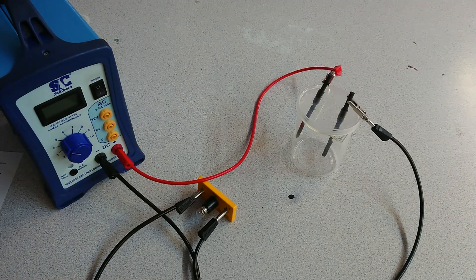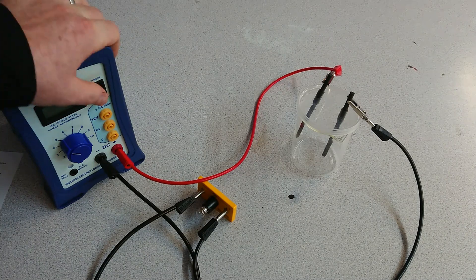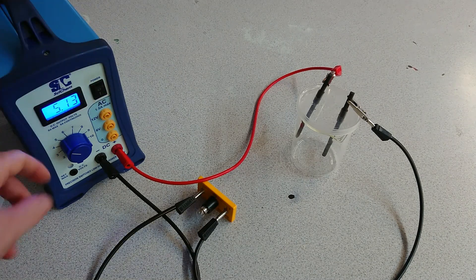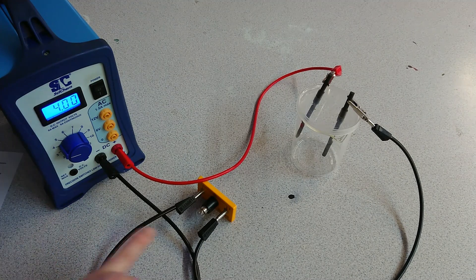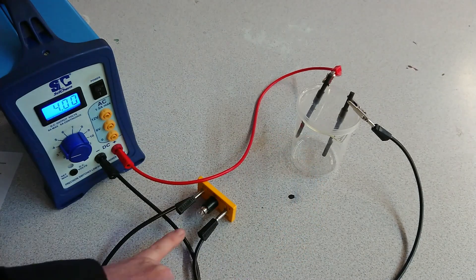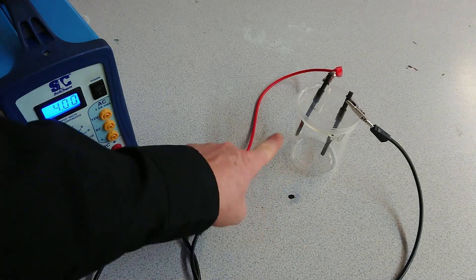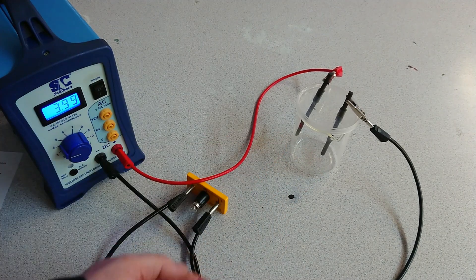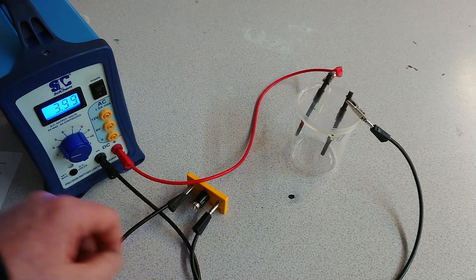We can turn it on. Make sure that we're on four volts, and we can see that we've got nothing happening because we have got no complete circuit. We're now going to add our liquid and see what happens.